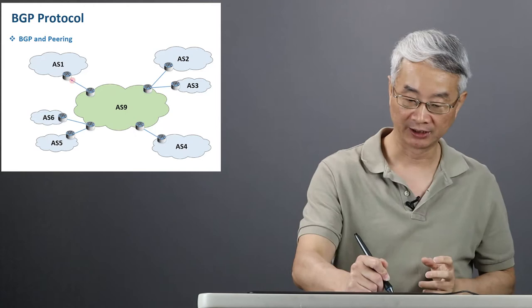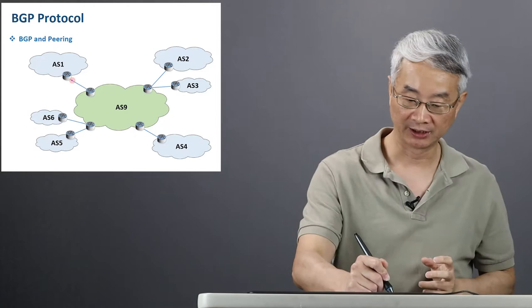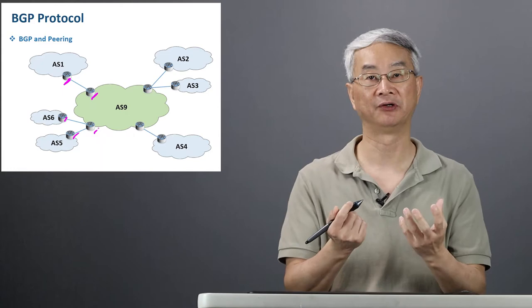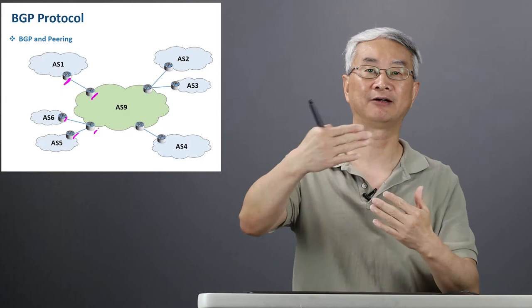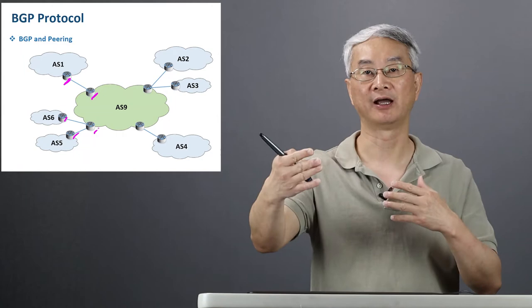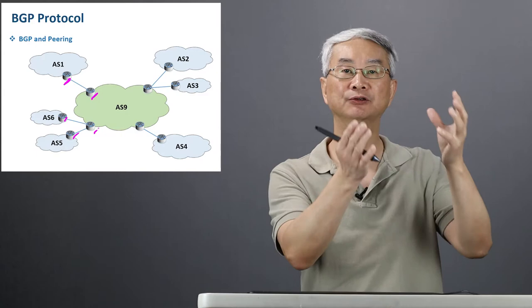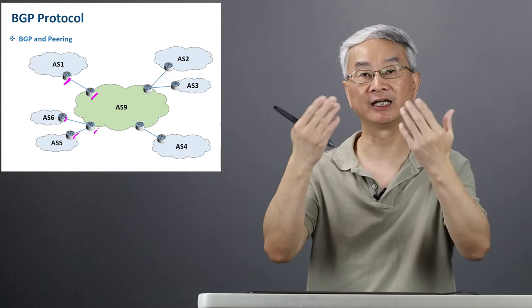Every autonomous system is going to have a BGP speaker, and they're going to connect with BGP routers from different autonomous systems and establish a peering relationship. Peering basically allows them to send information to each other — to inform the other that they can reach certain destinations. If you need to go to those destinations, they can be a candidate: give your traffic to them and they'll forward it for you. That's what peering is for.